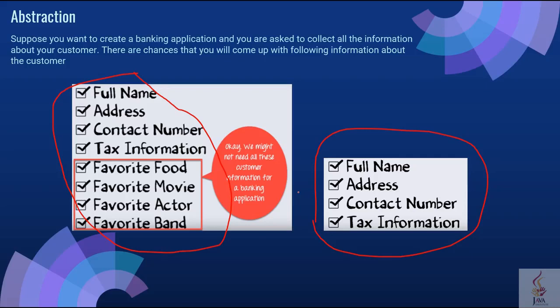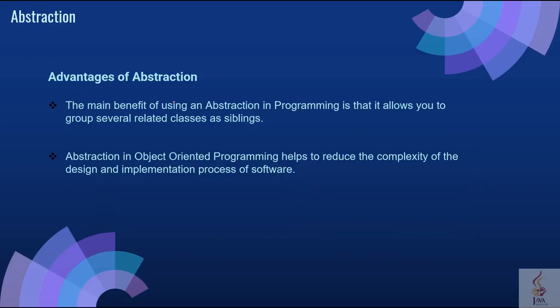However, the same information, once extracted, can be used for a wide range of applications. For instance, you can use the same data for a hospital application, job portal application, etc., with little or no modifications. Hence it becomes your master data. This is an advantage of abstraction in OOP. The main benefit of using abstraction in programming is that it allows you to group several related classes as siblings. Abstraction in object oriented programming helps to reduce the complexity of the design and implementation process of software.